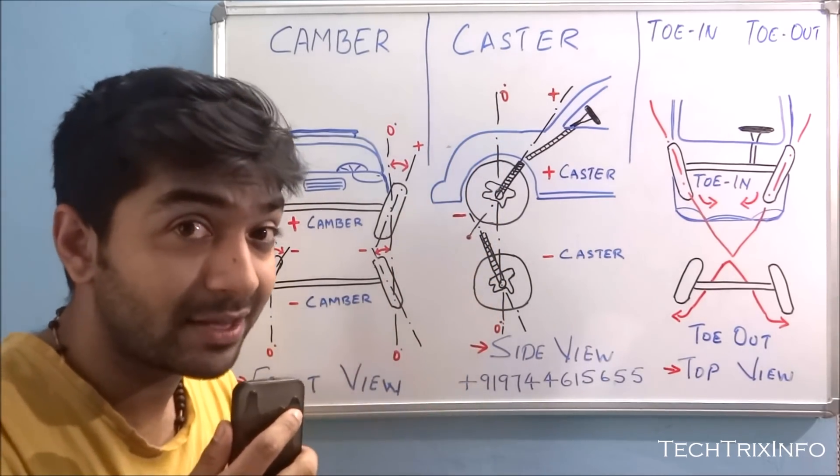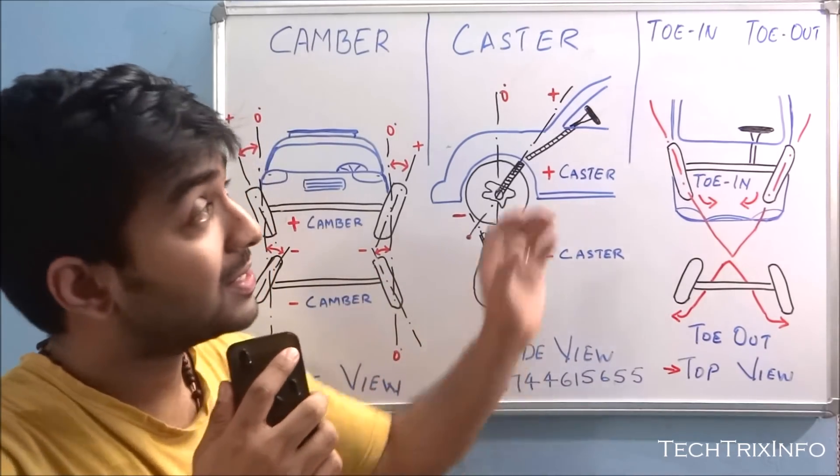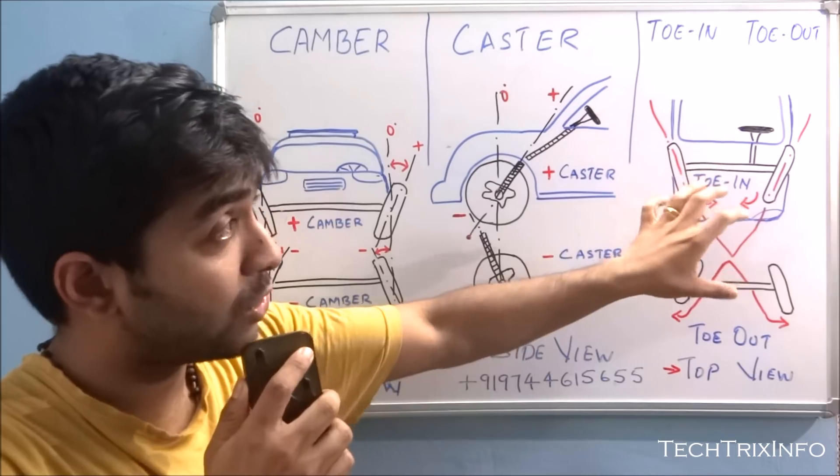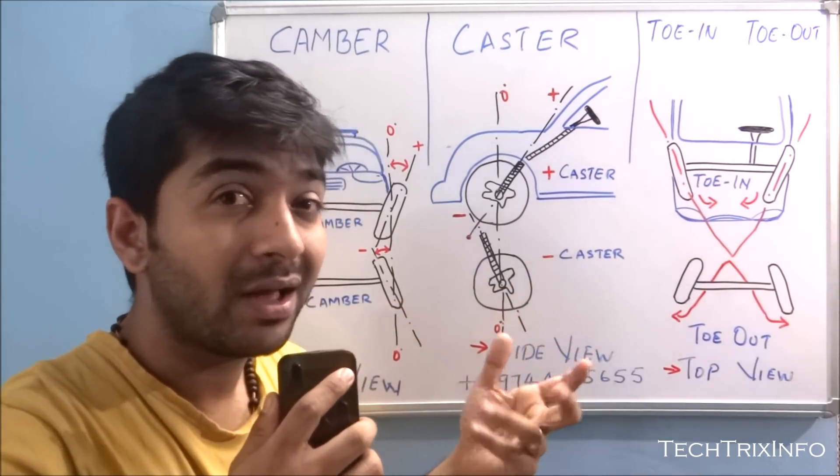I think you understand what's caster there. So now let's see what is toe-in and toe-out. So in all three of this, toe-in and toe-out is the most easiest one to be identified.